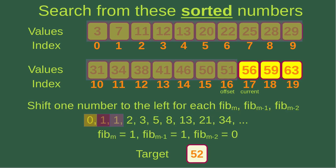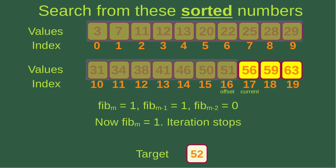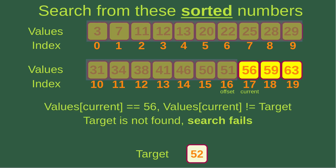I do the iteration again, shifting one number to the left: Fibonacci M is 1, Fibonacci M-1 is 1, and Fibonacci M-2 is 0. Since Fibonacci M becomes 1, I don't need to do any further iteration — it should stop here. The current index is giving me a value of 56, which is not equal to the target. Since it is not equal to the target and the iteration has stopped, the search has failed — I'm not able to find the target from the given sorted numbers using Fibonacci search.